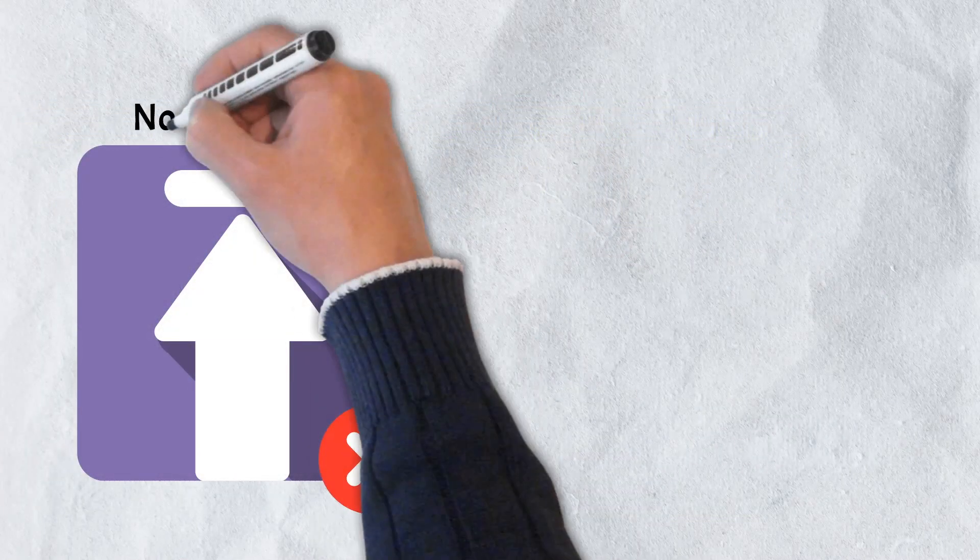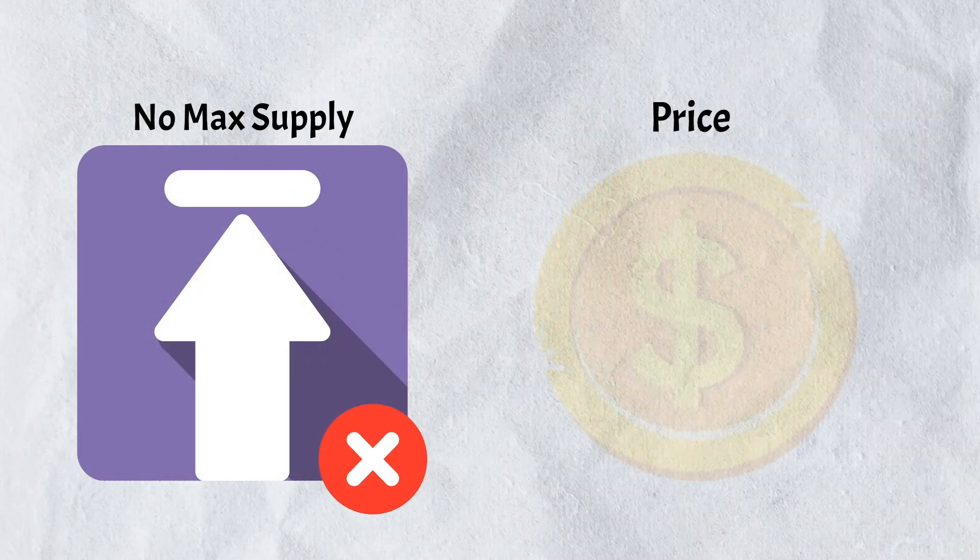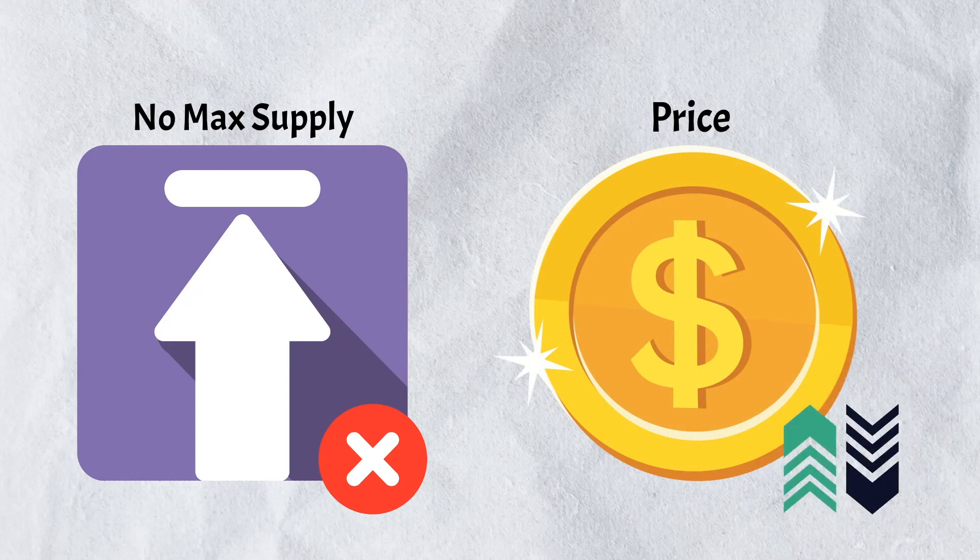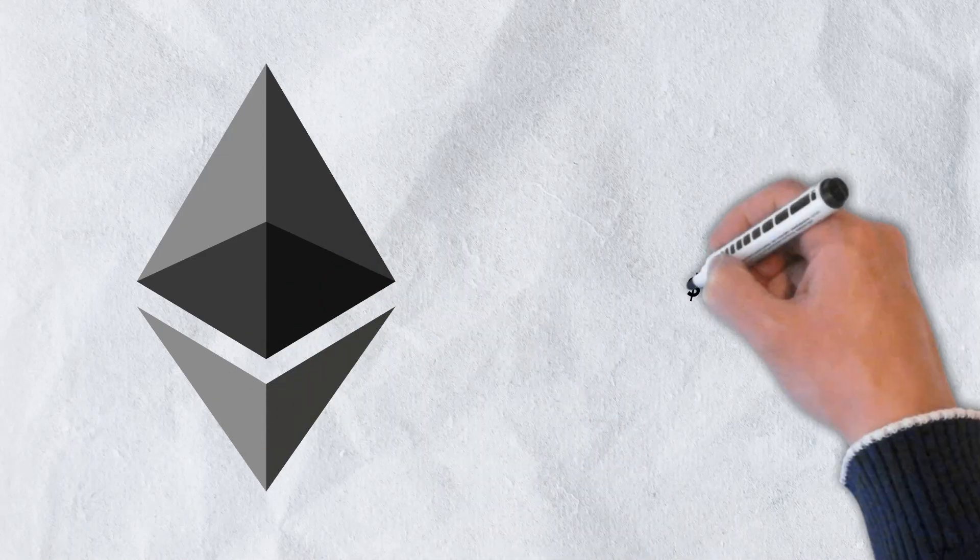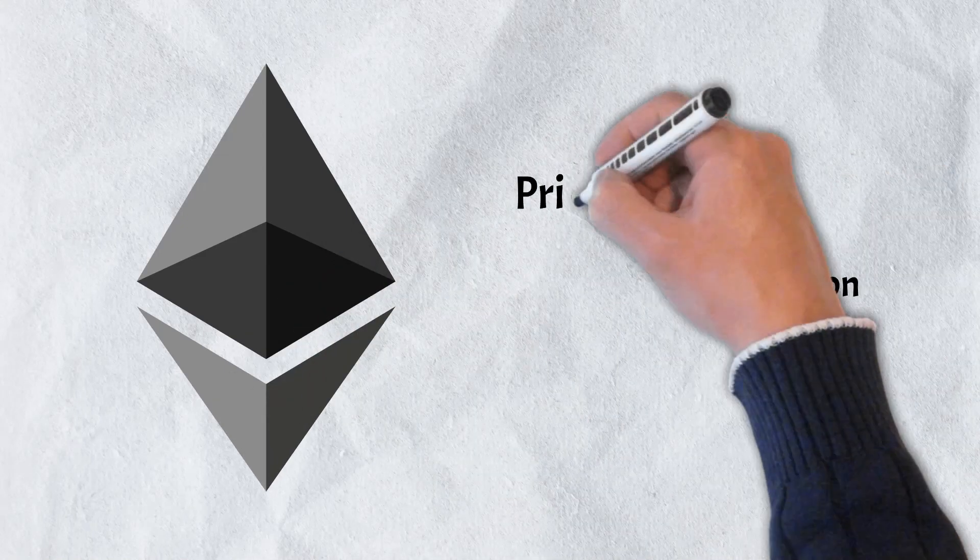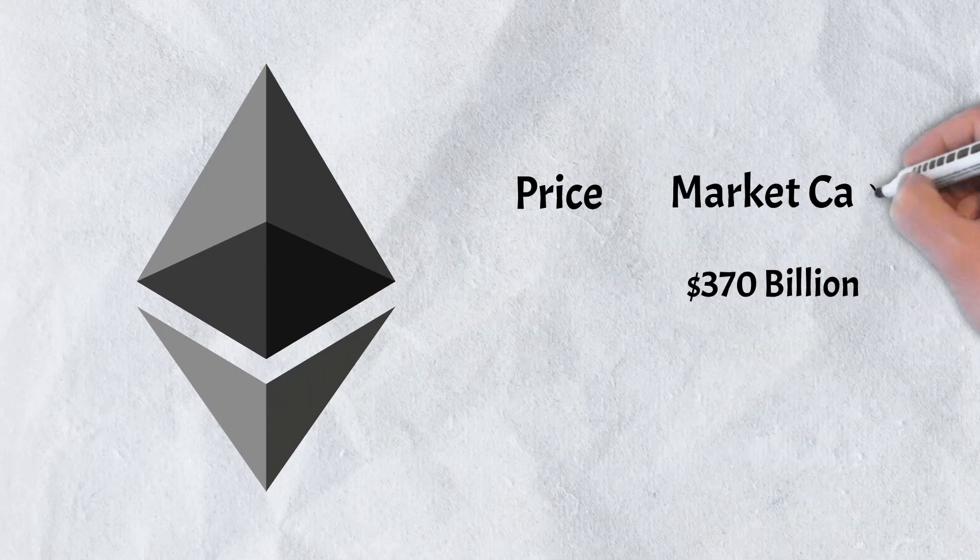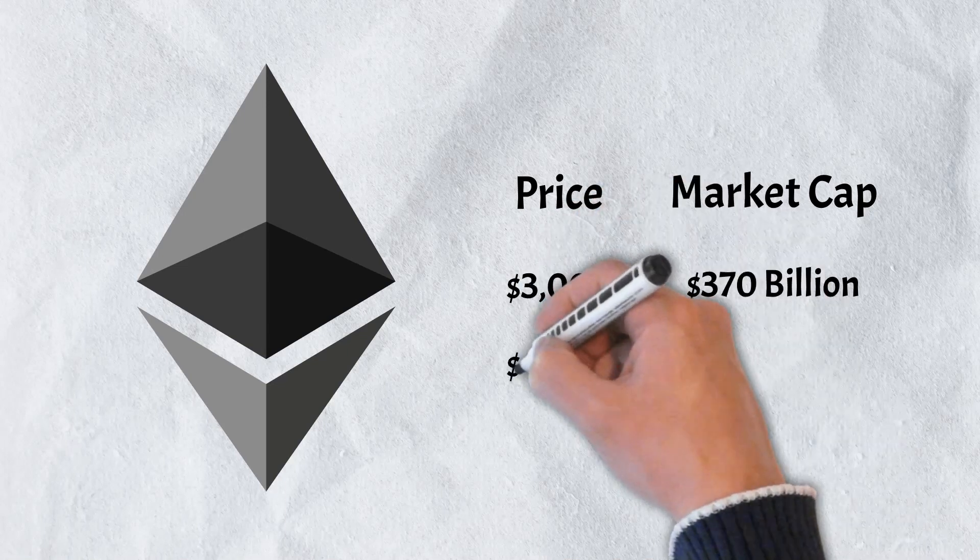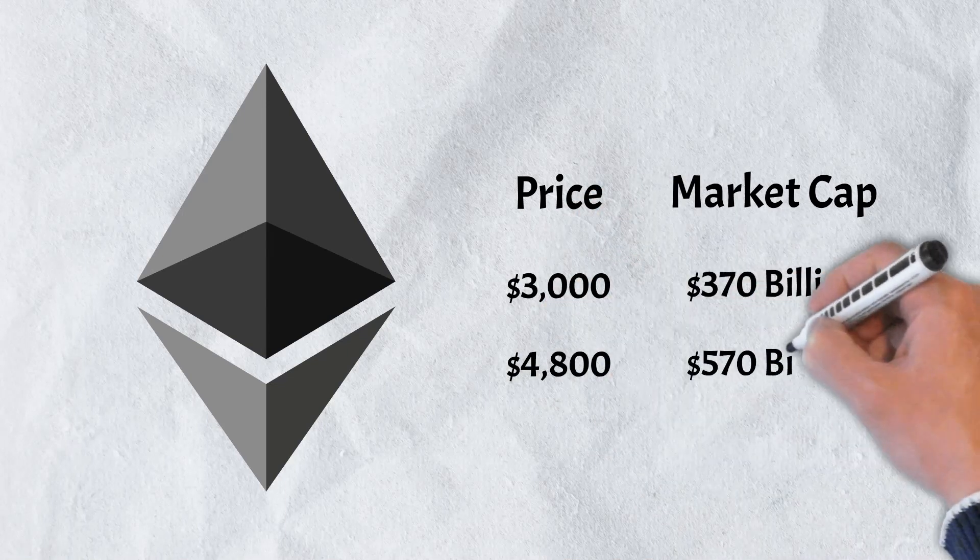As you may recall, Ether is an inflationary token because there is no max supply. Like Bitcoin, it can have wild price swings. At a current market cap of around $370 billion, Ether is the second-largest token, and at its height in November of 2021, it saw its market cap swell to over $570 billion.